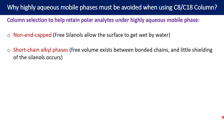Use short-chain alkyl phases such as C3 or C4. These are not popular for routine small molecule analysis, but with highly aqueous mobile phases you will get better results because they have free volume between the bonded chains and partial shielding of the silanol groups occurs, helping to keep the stationary phase wet. Also use hydrophilic stationary phases, since they will easily be wetted by aqueous mobile phases due to the like-attracts-like principle. Hydrophilic stationary phases include amine, amide, phenyl, or pentafluorophenyl phases.